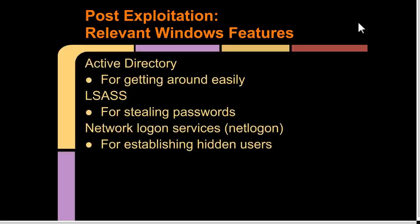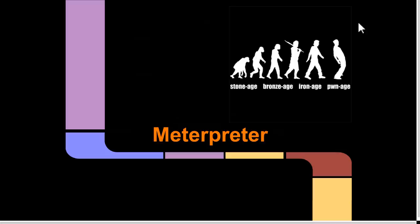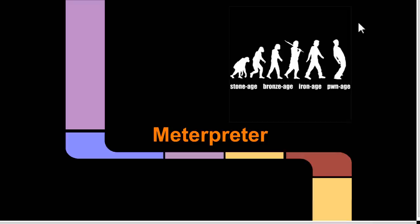Other relevant features for post-exploitation include Active Directory. With LSAS, there are tools that exploit LSAS and find basically leaked information or entirely clear-text passwords in its process memory. There's also NetLogon—if I were to add a user, I would use the Windows NetLogon feature to then access that new account on the system. All right, let's talk more in-depth about Meterpreter.